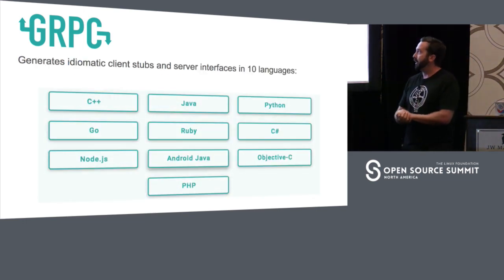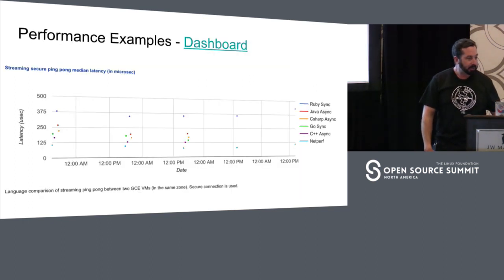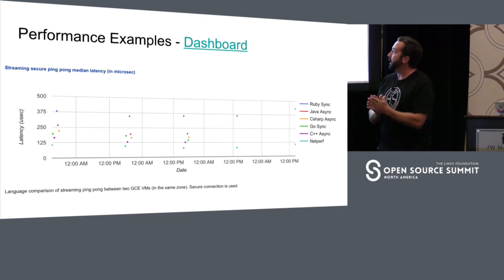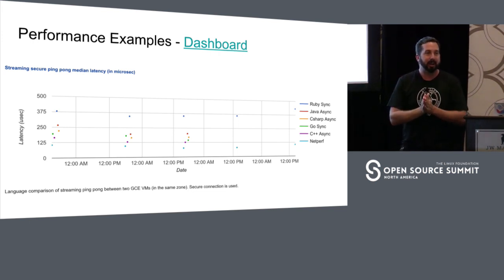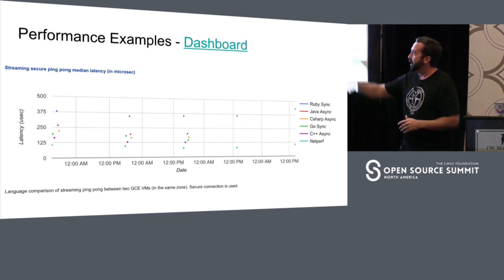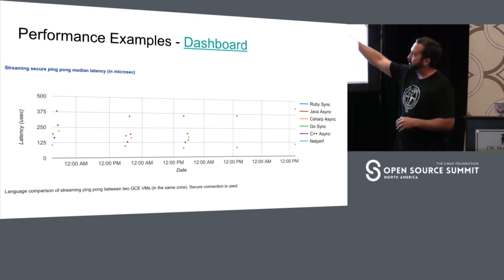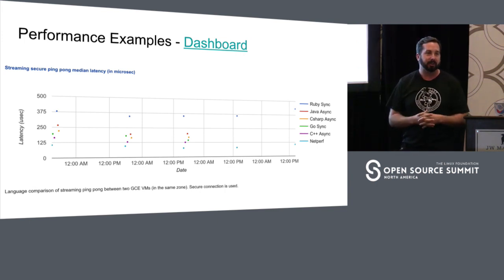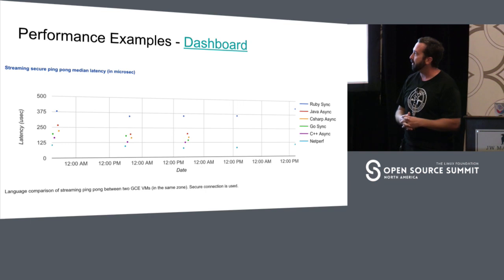What languages are supported today? All of the common languages you would use for front-end mobile development and back-end data center development. On the performance side, looking at a dashboard comparing languages: if you define a protobuf IDL and generate your client-server stubs, the round-trip overhead for C++ is about 25 extra nanoseconds, and then you've got Go, C#, and Java — super efficient from that perspective.